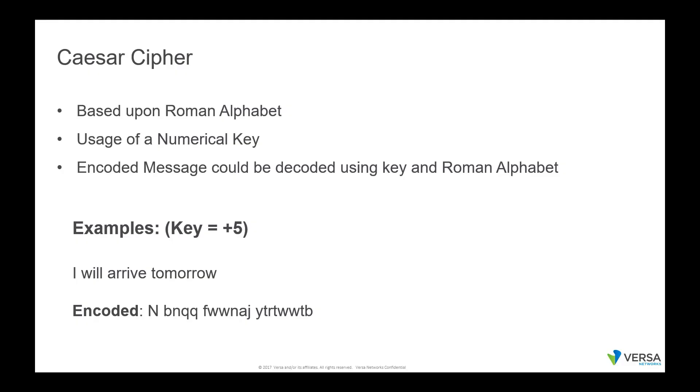This cipher was simplistic in its design. It was based upon the Roman alphabet, and it was one of the first to use a key. In this case, the key was just a numerical transposition of the letters — in the example you see here, where the key is plus five.